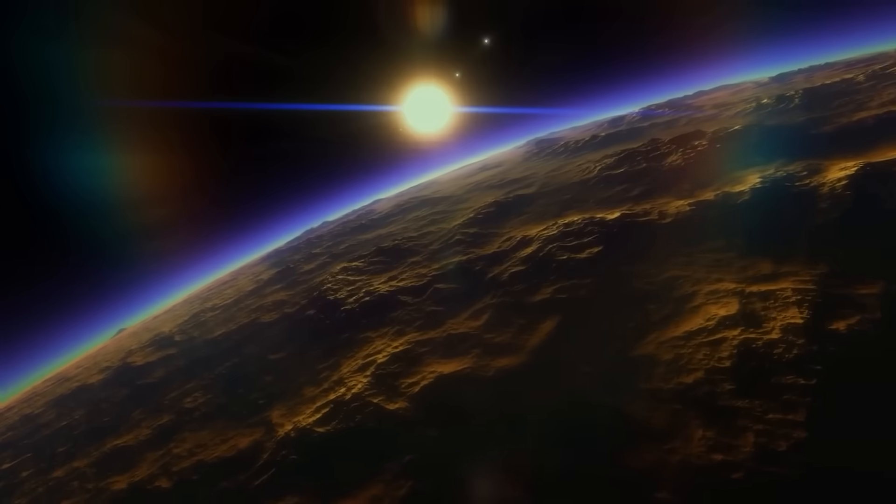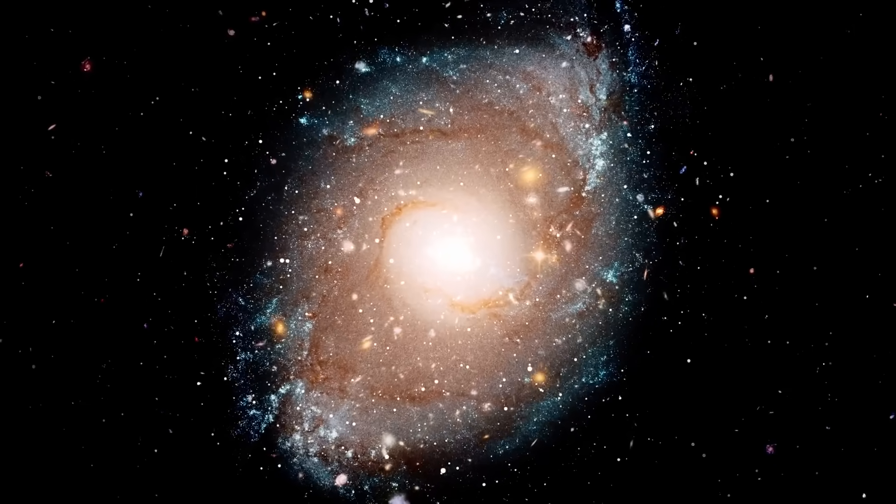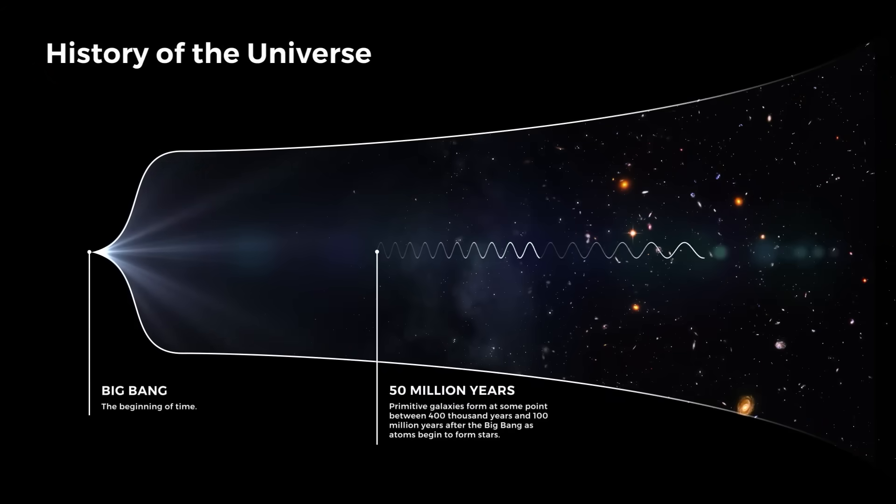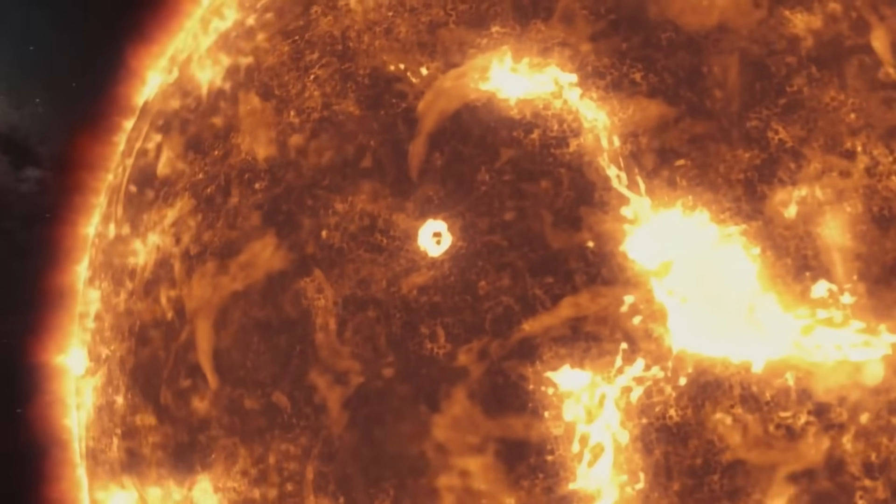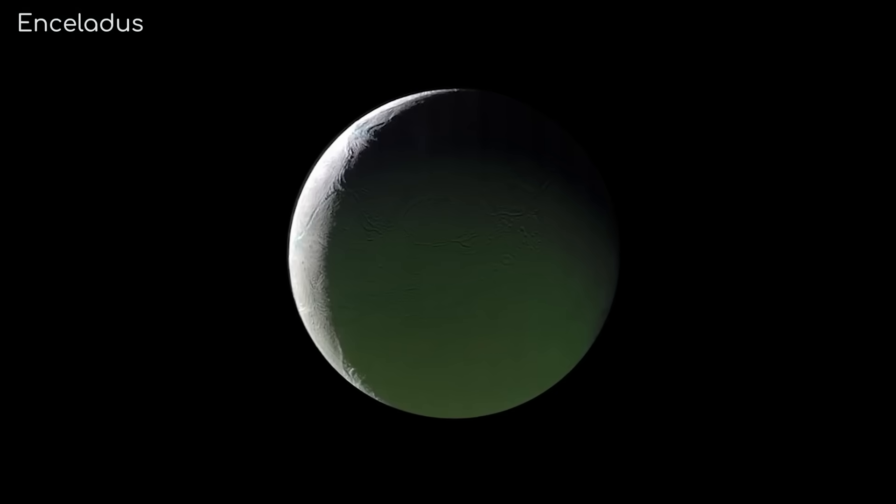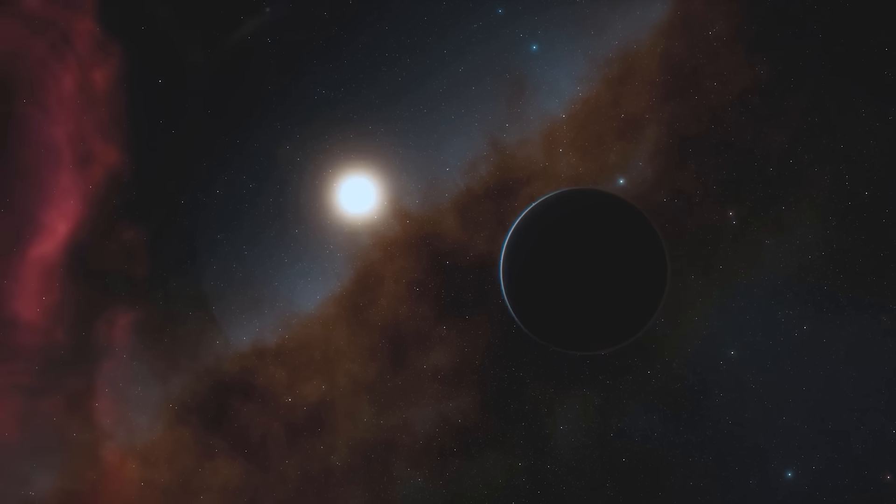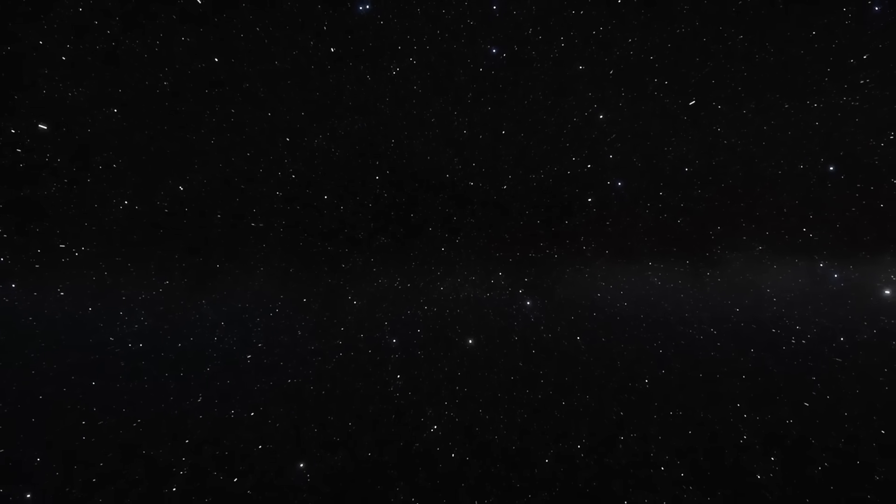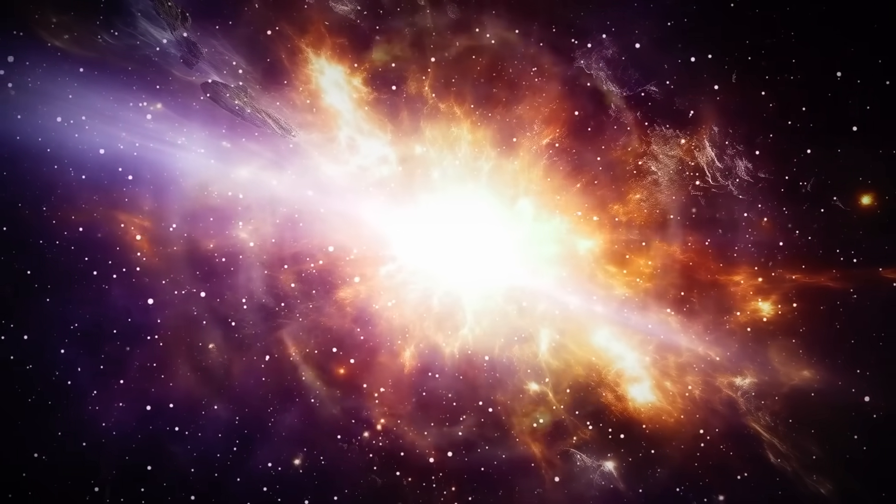The James Webb Space Telescope was built to refine our understanding of the cosmos, to give us clearer images, better data, sharper answers. Instead, it has done the opposite. It has opened cracks in our most trusted theories, forced us to question the timeline of the universe, and placed strange, impossible facts right in front of our eyes. Stars that shouldn't exist, moons with the chemistry for life in our own backyard, exoplanets with atmospheric signatures we can't explain, galaxies and black holes forming long before they were allowed to, and a universe that, instead of being random and chaotic, appears to have been organized and structured almost from the very beginning.